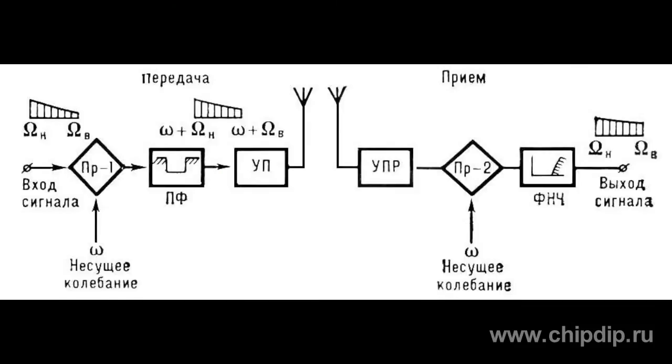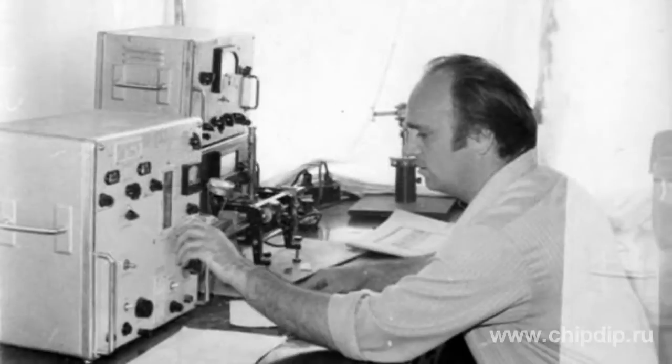Single band modulation is an operation of electrode fluctuations at which the signal is transferred only on one side frequency band. It is mainly used in single band communication, radio telemetry, radio telemechanics, and television.